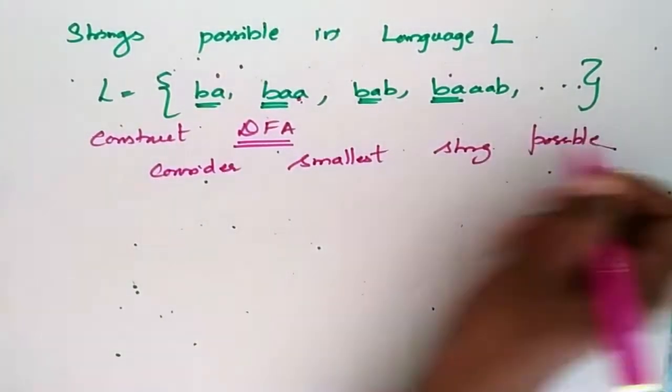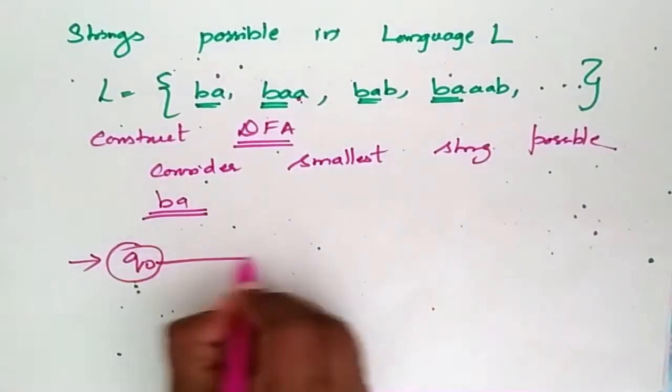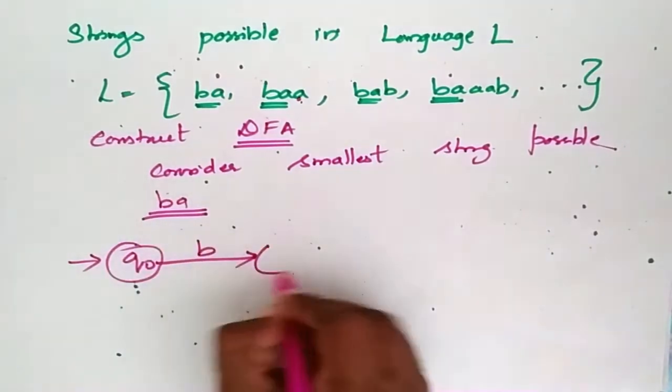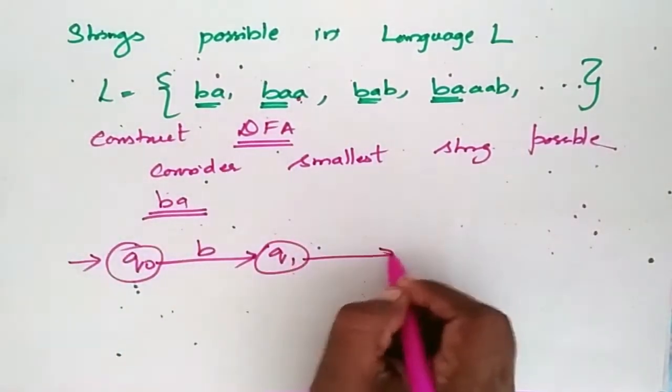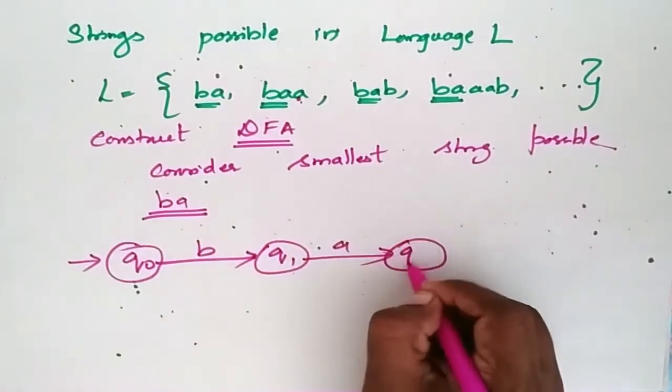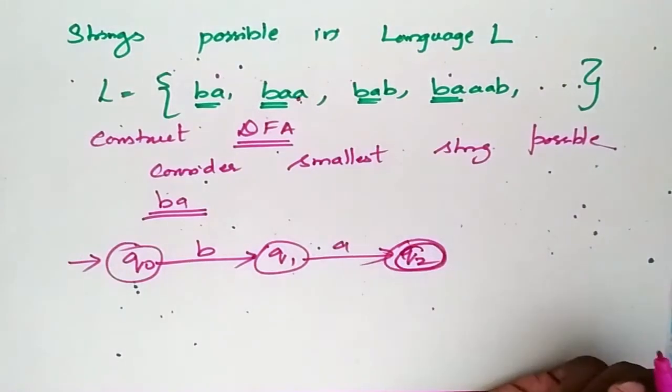So the smallest string is BA. Now Q0 is the initial state. It accepts B as input and moves to state Q1. Then A as input and it accepts and moves to the next state Q2. This becomes the final state.